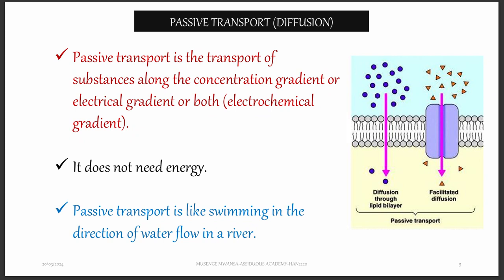Another factor is concentration gradient. The bigger the concentration gradient — say on one end of the cell you have 20 molecules and the other end only 2 — that is a large concentration gradient. Compare that to 10 molecules on one end and 5 on the other, which is a small concentration gradient. So the difference in concentration on the two ends of the cell membrane determines the size of the gradient.